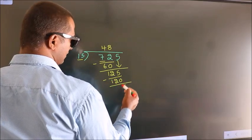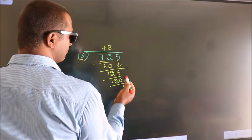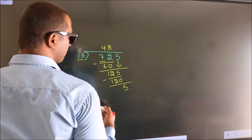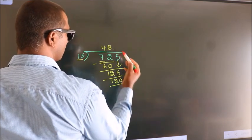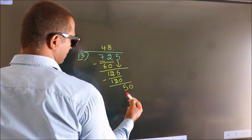After this, there are no more numbers to bring down. So what we do is put a dot and take 0, giving us 50.